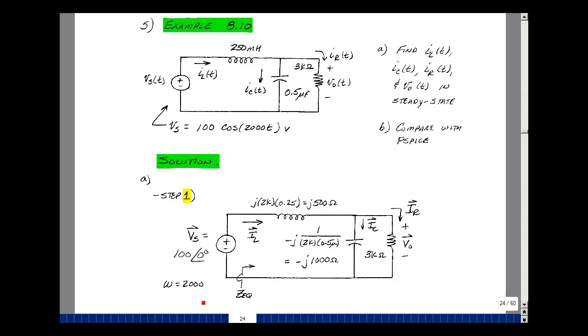And now we can find our other variables. So here's the current I sub L. There's a phasor I sub L, a phasor I sub C, and a phasor I sub R, and a phasor V out.